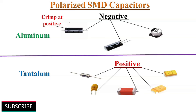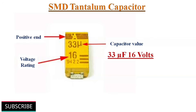Aluminum electrolytic capacitors have their negative lead indicated by a stripe marking on their case. The stripe marking on a tantalum capacitor indicates the positive connection. In some SMD tantalum capacitors, the capacitance value and working voltage is directly printed on the surface, such as 33uF 16V. The bar marking indicates positive connection.